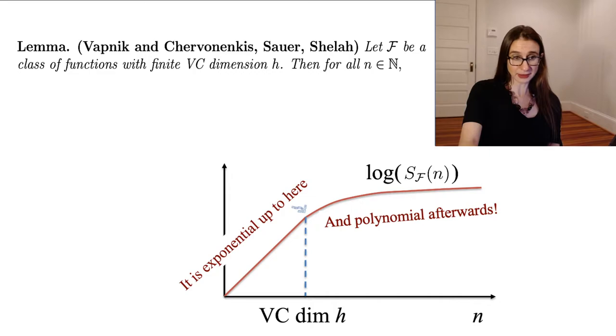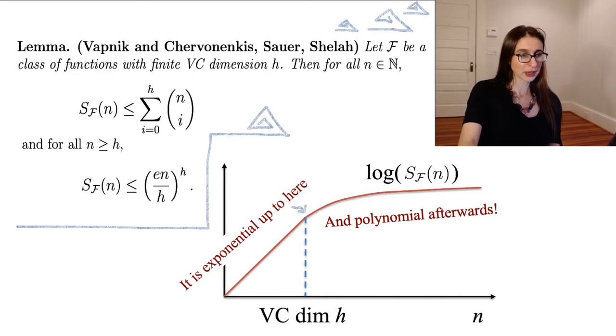Then for all N, for all natural numbers, then the growth function is upper bounded by a function of the VC dimension. And there are two separate bounds here. And the first one, you can see the VC dimension up in the upper part of the sum there, right? That's what that's doing.